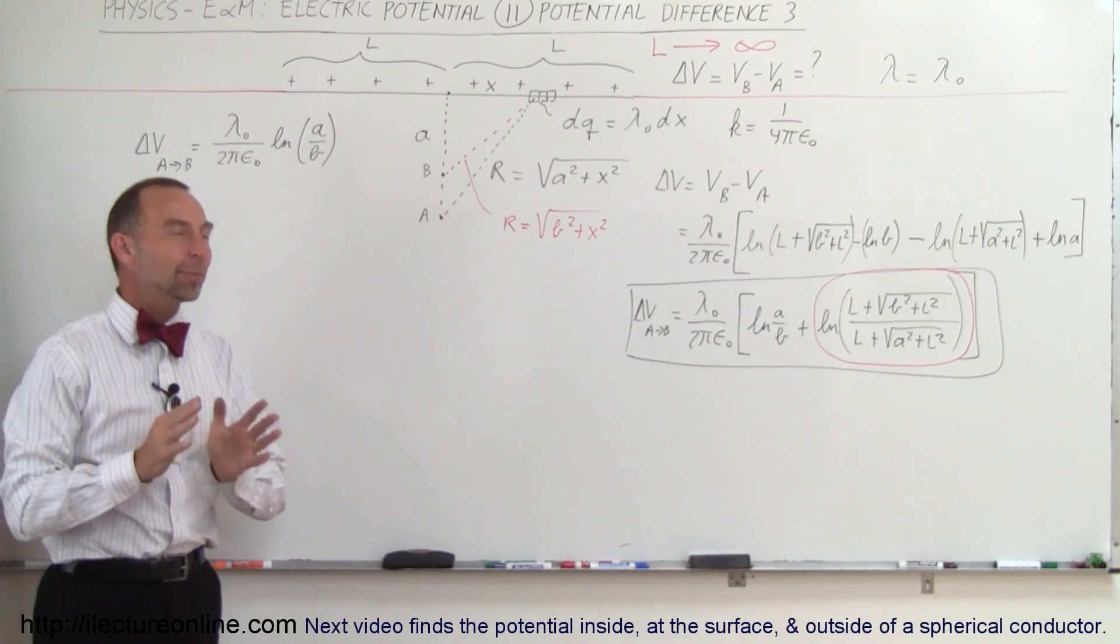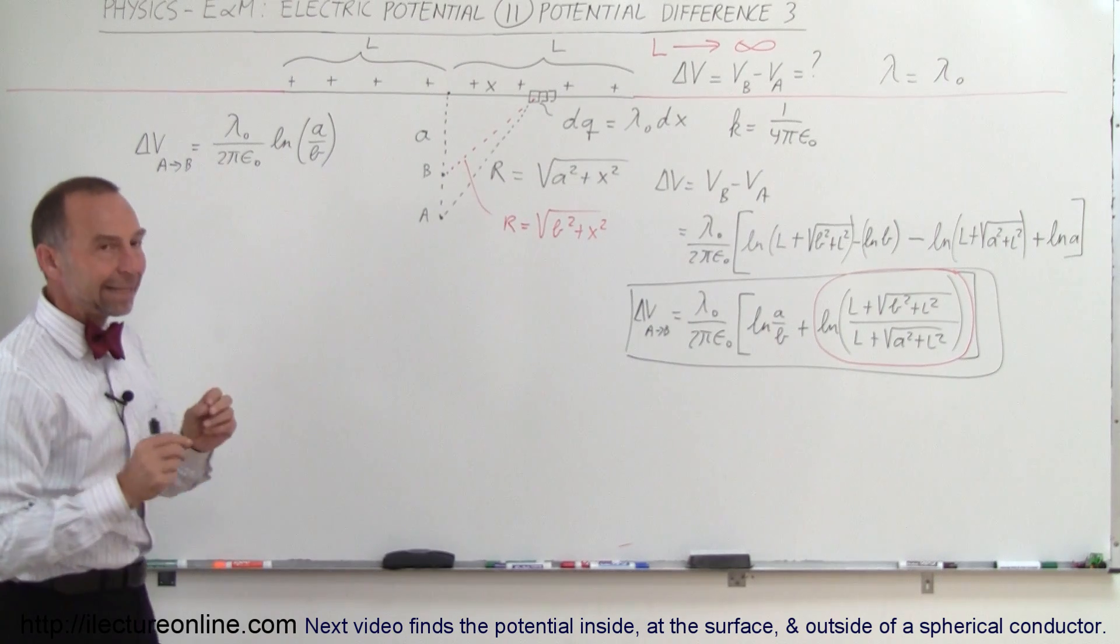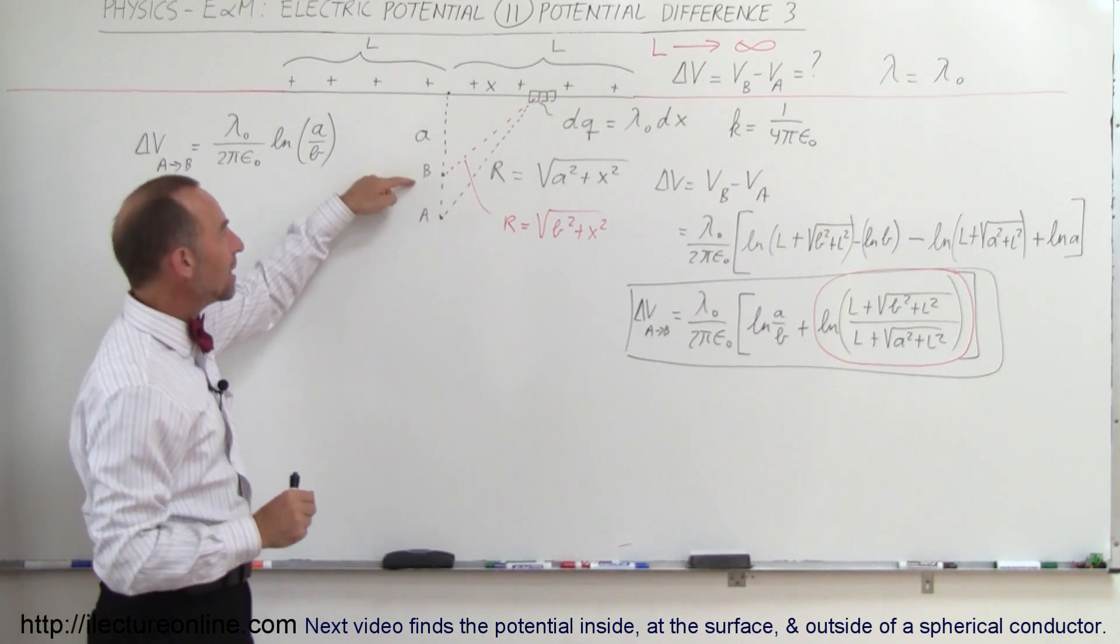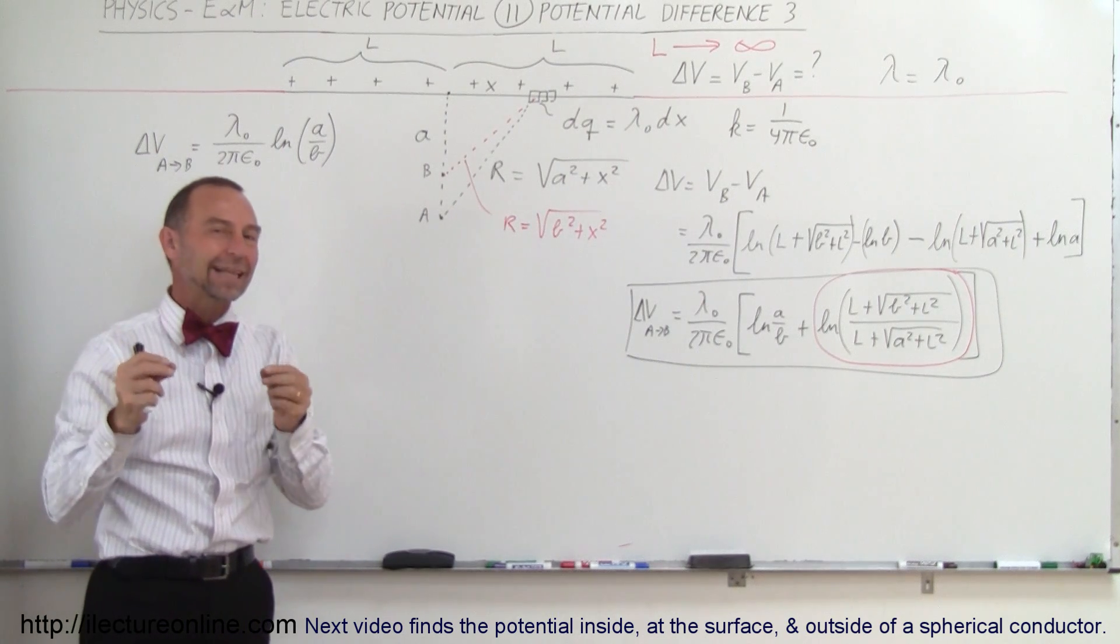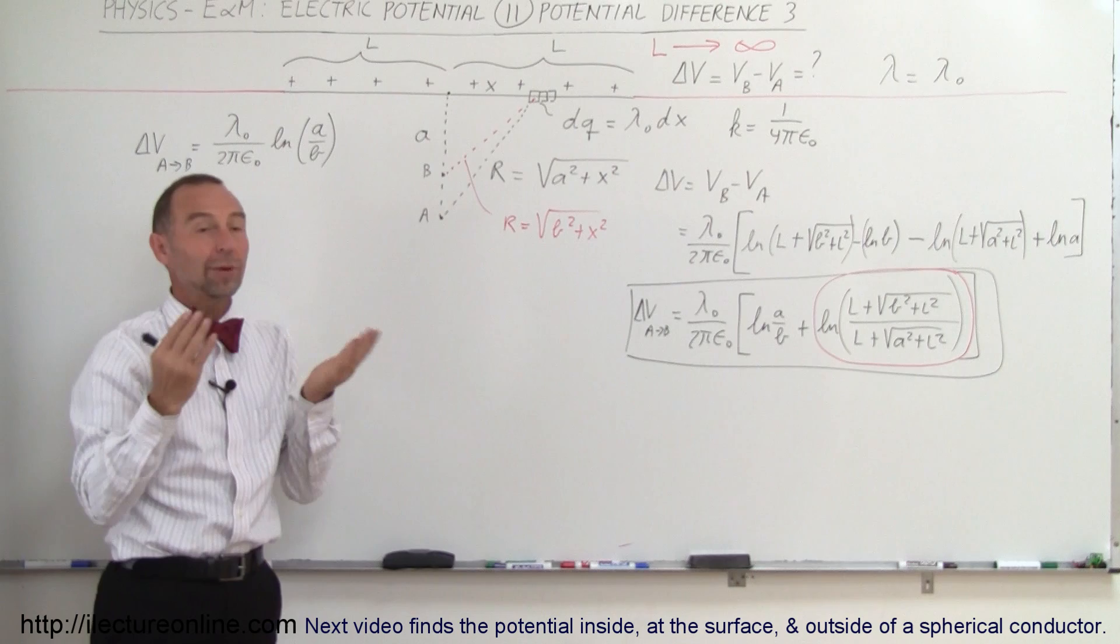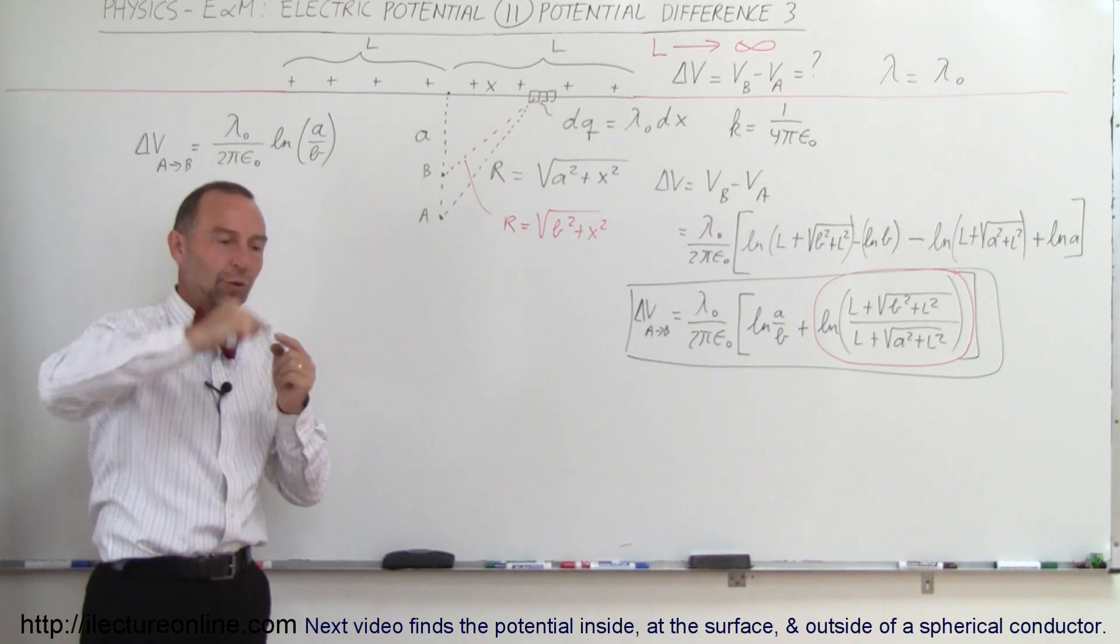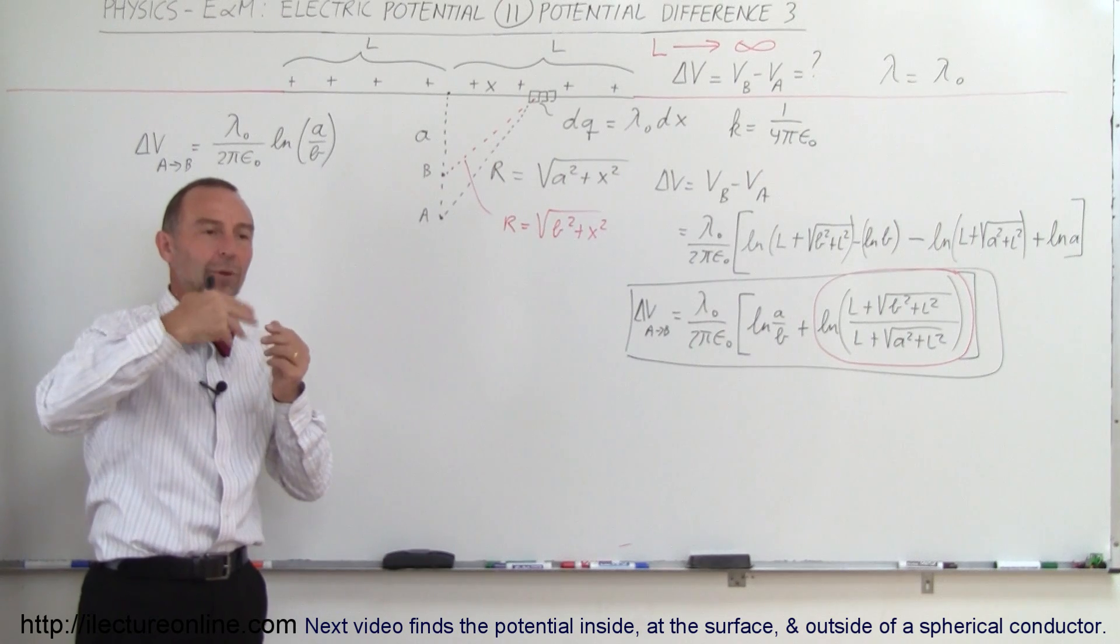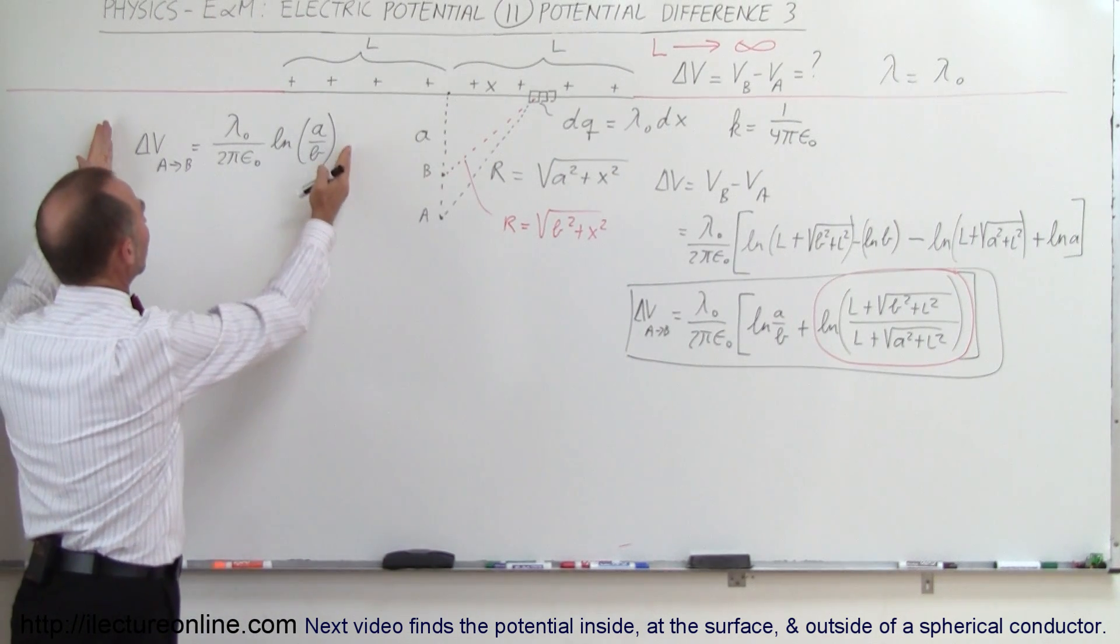Welcome to Electronic Line. A couple videos ago, in video number nine, we calculated the potential difference going from A to B for an infinite line charge using the Gaussian surface to calculate the electric field and then integrating from A to B through the electric field. Remember that the potential difference is simply the difference of moving through the electric field multiplied times the distance traveled, and when we did that we got this as the answer.